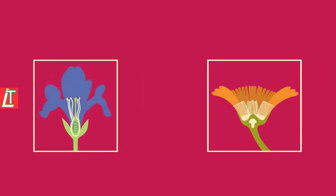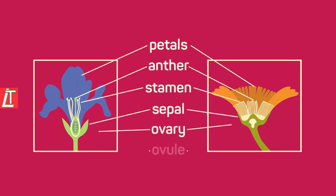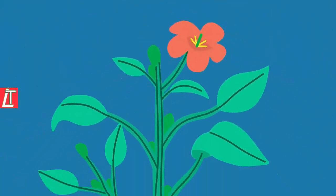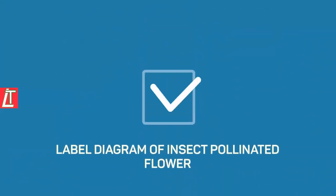See if you can identify the parts on these slightly different flowers. Check your answers now. So in this video you have learned about the different structures of a plant. You should now be able to label a diagram of a plant and an insect pollinated flower.